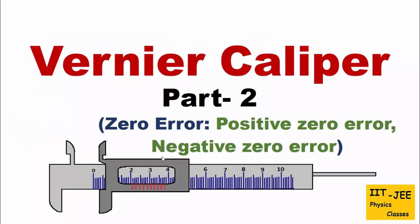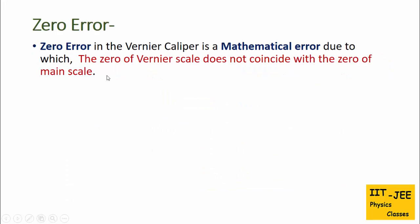Hello friends, continuing with Part 1, here in Part 2 we will discuss how to calculate zero error, positive zero error, and negative zero error. Zero error in the vernier caliper is a mathematical error due to which the zero of the vernier scale does not coincide with the zero of the main scale.